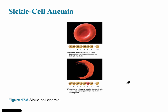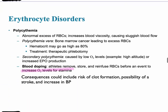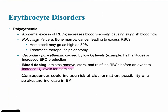At the opposite end of the spectrum is polycythemia, which involves a very high hematocrit and an abnormal excess of red blood cells. This results in high blood viscosity and sluggish blood flow due to extreme thickness. The hematocrit can be as high as 80%, which can be very lethal.